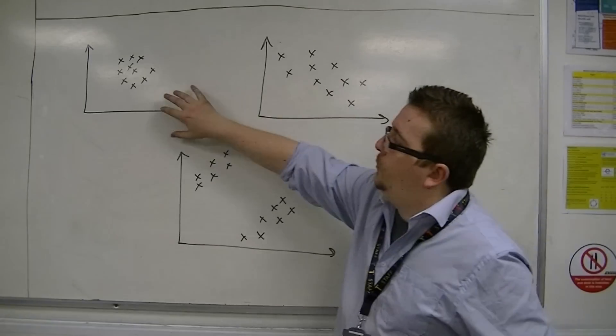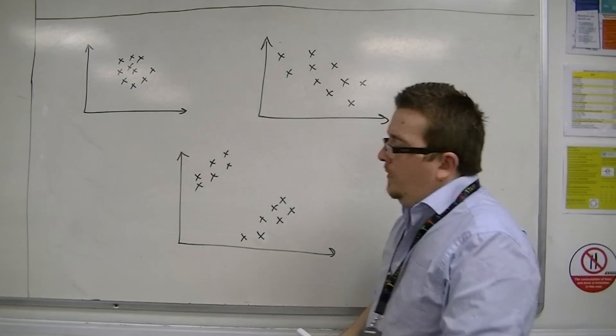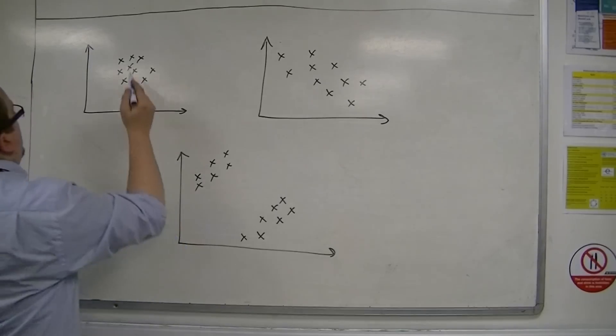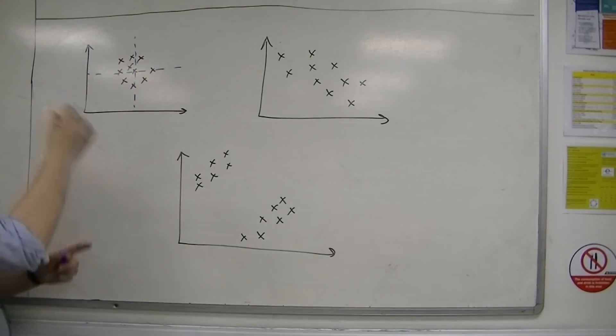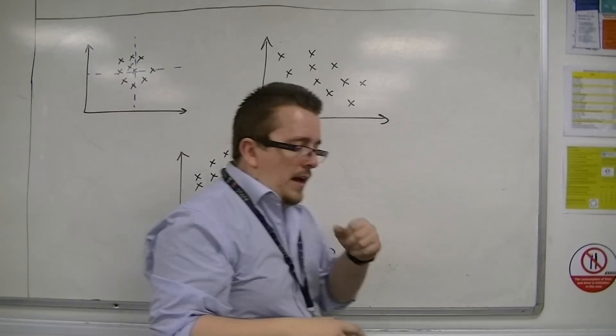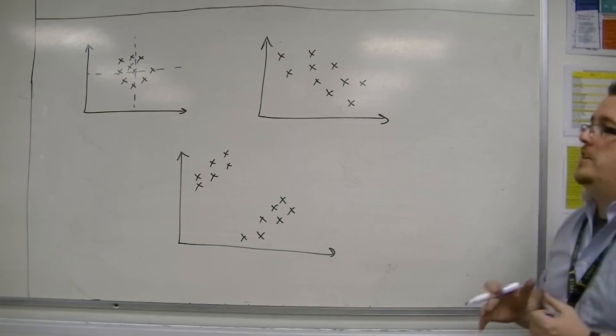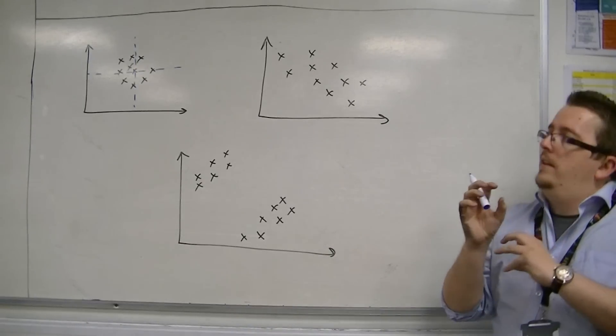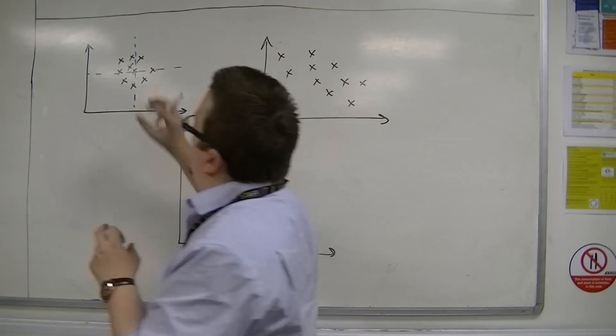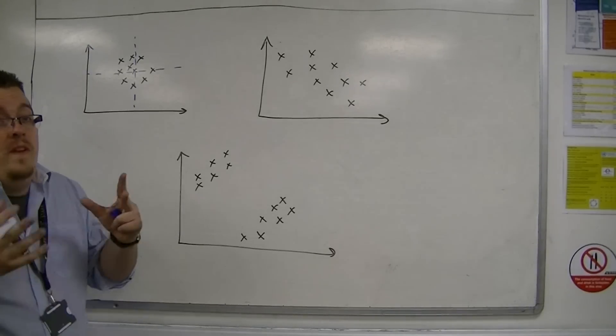So we're going to look at this one to start off with. Now, in a lot of cases, the easiest way to see these kind of things is to draw a dotted line down the middle and across. So you split it into four quadrants.